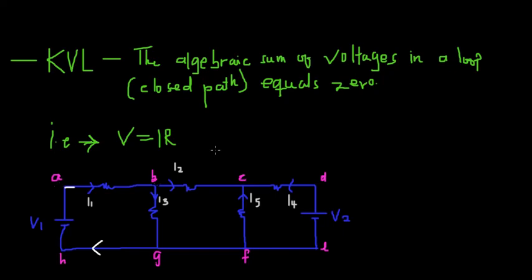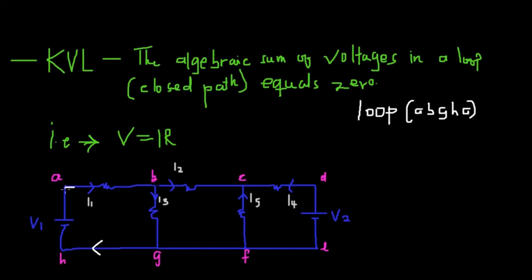When you take a loop like A-B-G-H-A, the loop is closed — the current starts from this point, moves toward A to B, back to G, then toward H, and then back to A again. That means you've chosen the correct loop. But when you take a loop like A-B-G-H without returning to A, the loop is open. The path has to be closed.